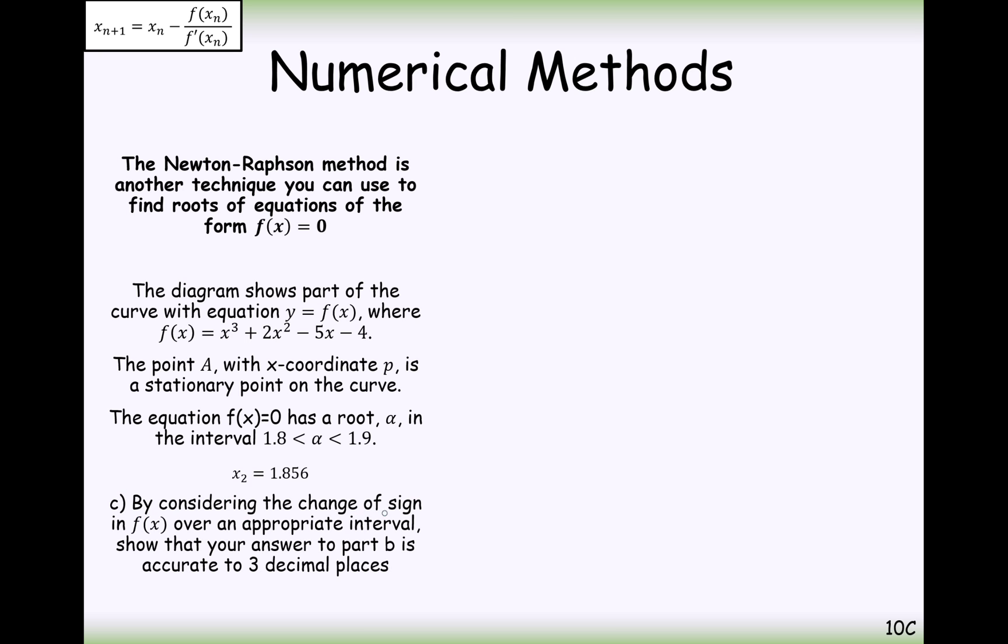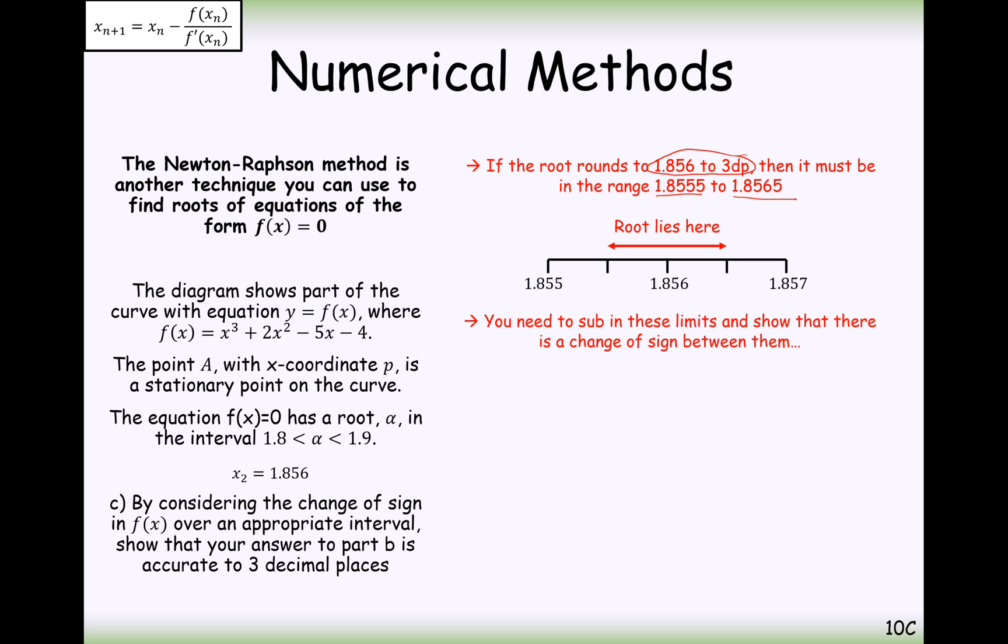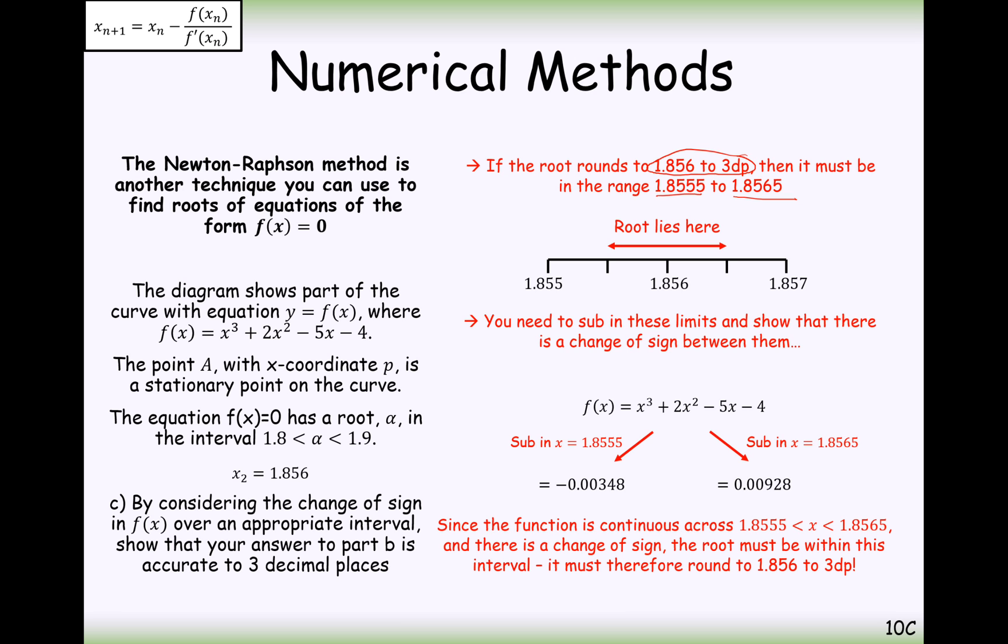Now, by considering part C here is by considering a change of sign over f(x), show that our answer to part B is correct to 3 decimal places. So we have to go back to the old method here. We have to show a change in sign. And remember, if we're showing this is correct to 3 decimal places, then we have to select a boundary to 4 decimal places in which we can then show a positive to negative or negative to positive sign change. So the solution is going to exist in between there. So substituting in 1.8555, we get a negative answer. Substituting in 1.8565, we get a positive answer. So therefore, since the function is continuous across this interval and there is a change of sign, the root must be within this interval, which is therefore rounded to 1.856 to 3 decimal places.